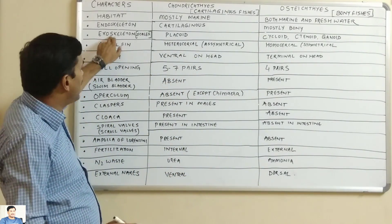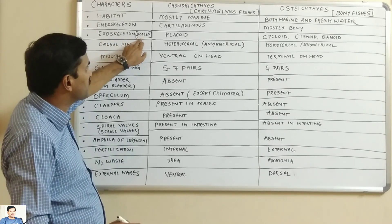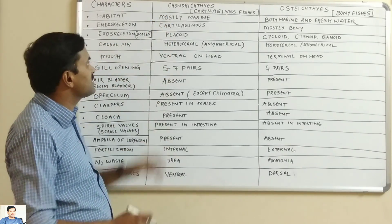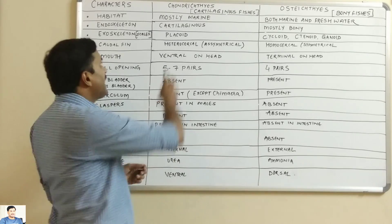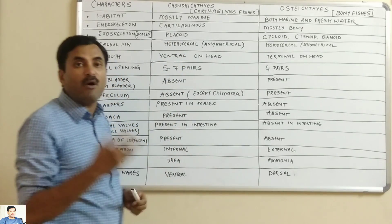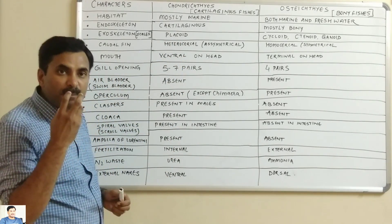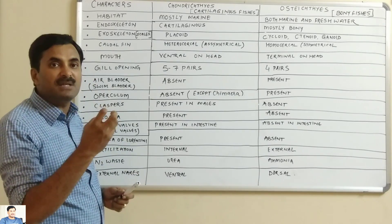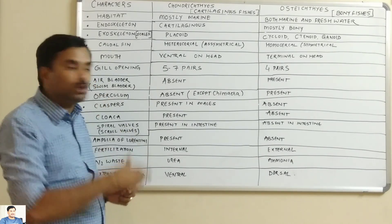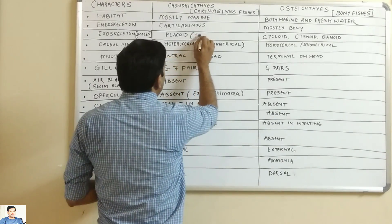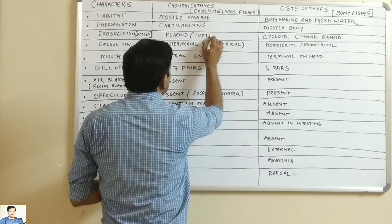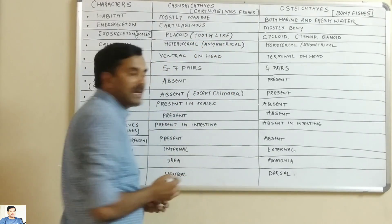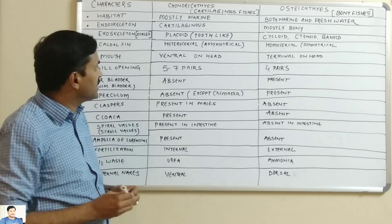Next, the exoskeleton is in the form of scales. In Chondrichthyes, the scales are of placoid type. Placoid means tooth-like, and they are backwardly directed.